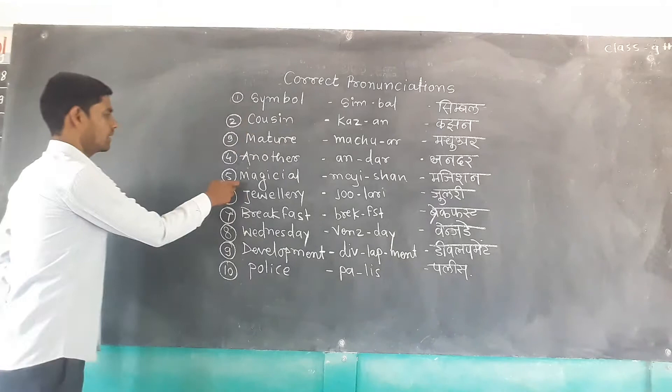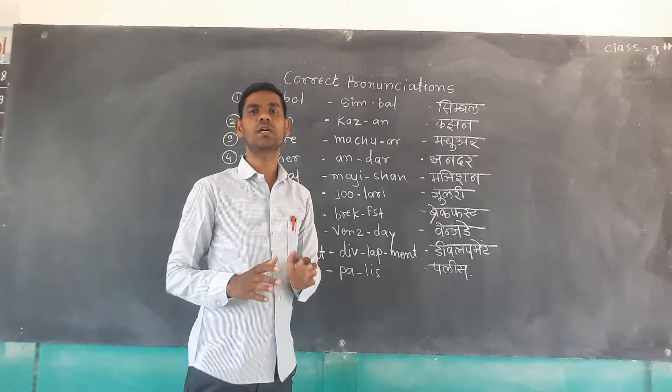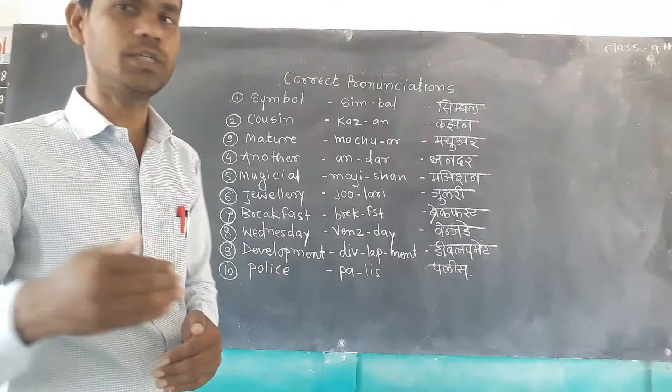Number five — 'magician.' This is also not the correct pronunciation of 'magician.' The correct pronunciation is 'magician,' spelled M-A-G-I-C-I-A-N. Not 'magician' — it is 'magician.'